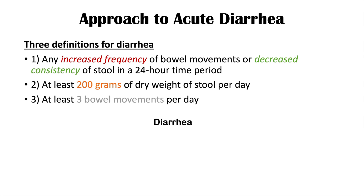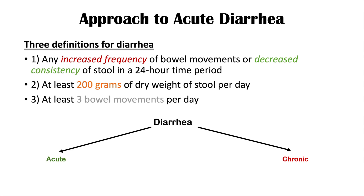Once someone has diarrhea defined by one or all of these definitions, we split diarrhea up by the amount of time someone's been having it. We break diarrhea down into acute and chronic: acute diarrhea is having diarrhea for less than two weeks, and chronic diarrhea is having diarrhea for more than two weeks.